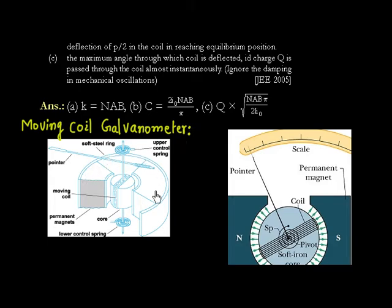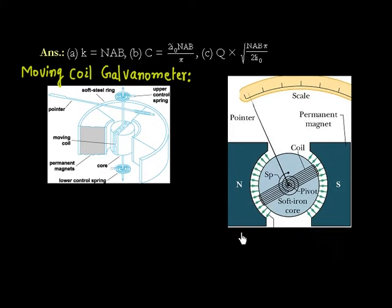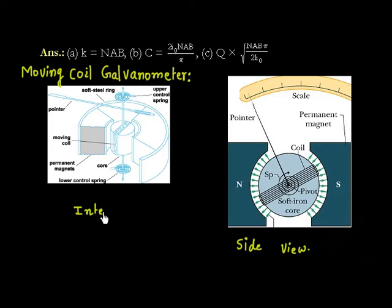If you see this diagram, this is the top view. This is the internal mechanism of moving coil galvanometer. And this is the side view. If you see from the front, it will look something like this. This is the internal mechanism of how the moving coil galvanometer works.